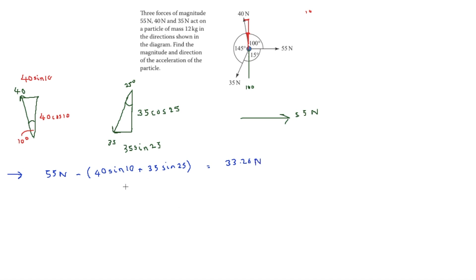For the vertical direction, the 55 N force has no vertical component, so we only have two forces: upward 40 cos 10, minus downward 35 cos 25. That equals 7.67 newtons.